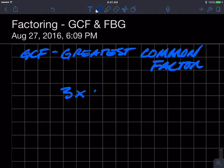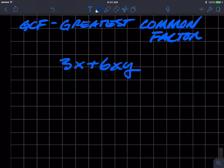So here's an example. 3x plus 6xy. So what value goes into both of these terms, or is a factor of both of these terms? Hopefully you would say that a 3 is a factor of 3, and a 3 is a factor of 6, and x is a factor of x. So 3x is a factor of both of these terms.